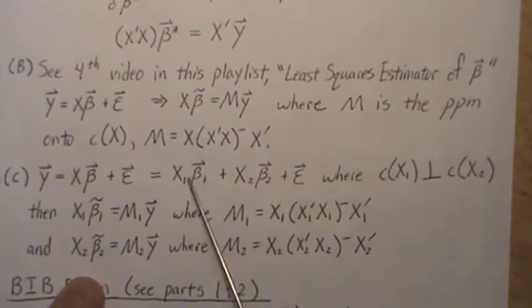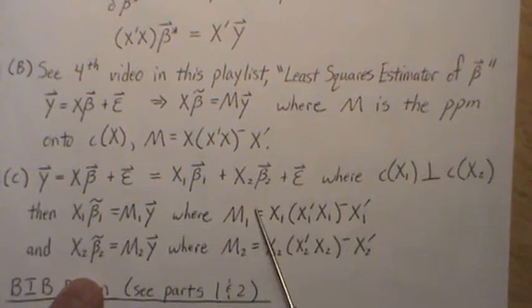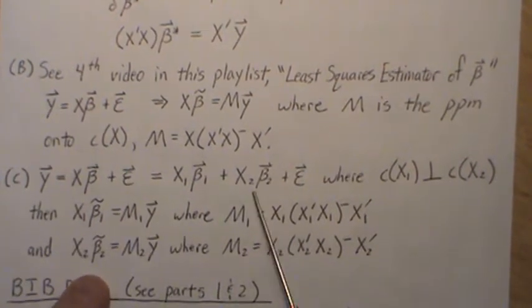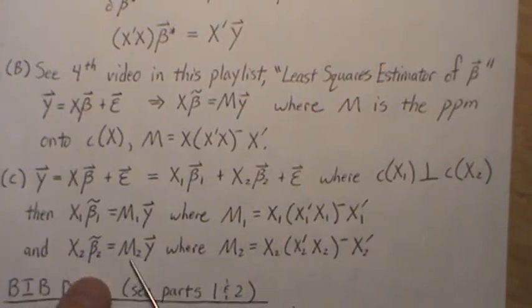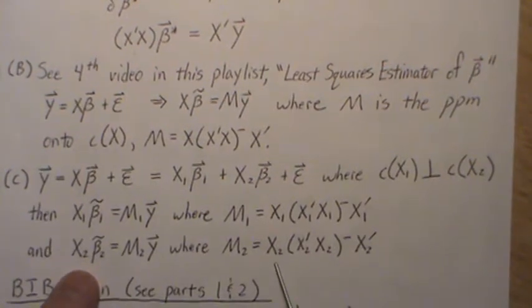And it's the same for beta 2. We don't need this information. They're orthogonal to each other, so this adds no information in estimating beta 2. But the least squares estimate for beta 2 must satisfy this, where M₂ is the perpendicular projection matrix onto that column space of x2.